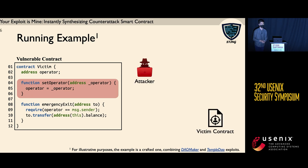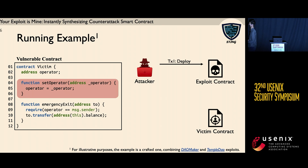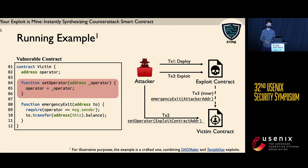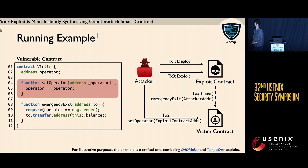On the right-hand side, we show a case of exploit. There are three transactions in total. The first transaction deploys the exploit contract. The second transaction sets the operator of the victim contract to a malicious entity. And the last transaction lets the exploit contract invoke the emergency exit function to transfer funds from the victim contract to the attacker.